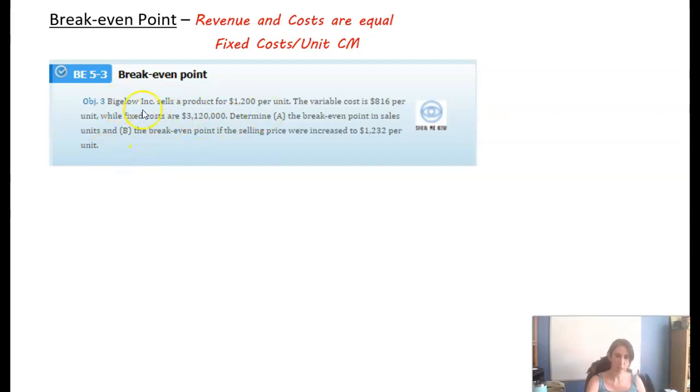So let's look at this first one. Bigelow Inc. sells a product for $1,200. The variable cost is $816, while fixed costs are $3,120,000. Determine the breakeven in sales in units.